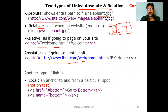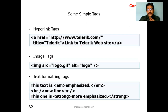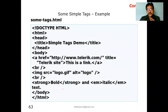We also have id links — connecting anchor tags using name='bottom' or id='bottom', and linking via href='#bottom'. So there are three types: absolute, relative, and id links. We can also insert images using the img tag with src attribute, and apply text formatting such as emphasize, break, and strong tags alongside hyperlinks.